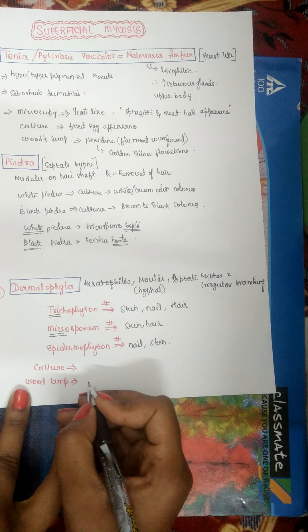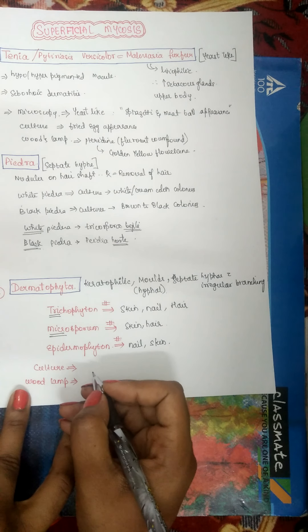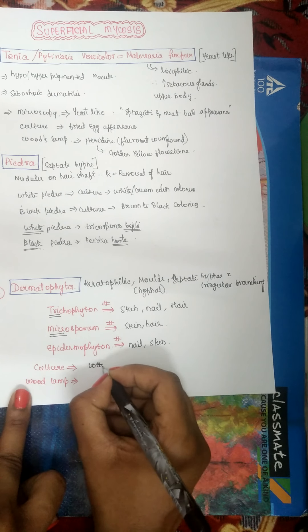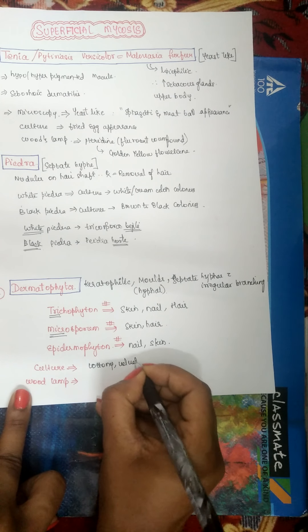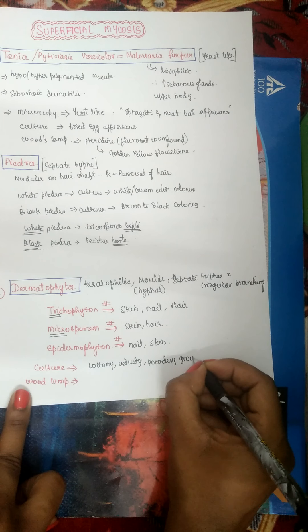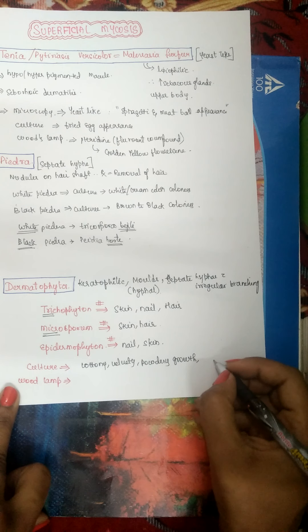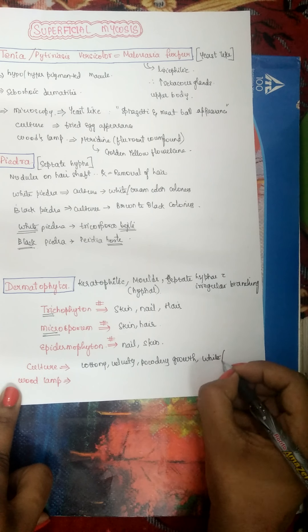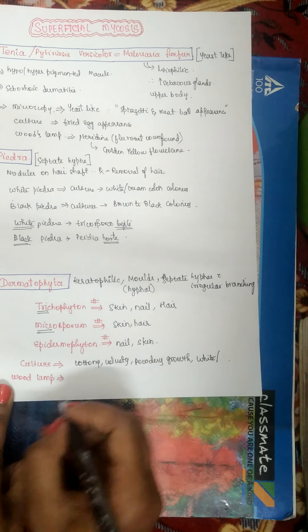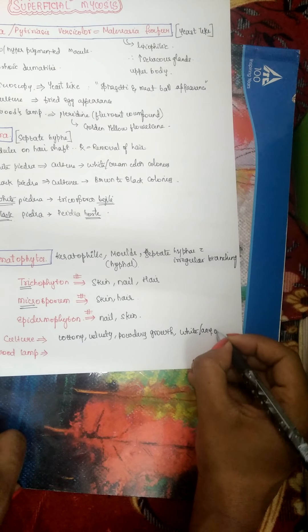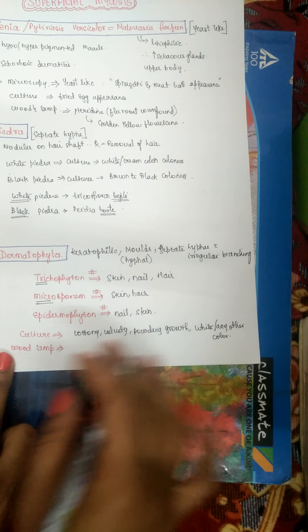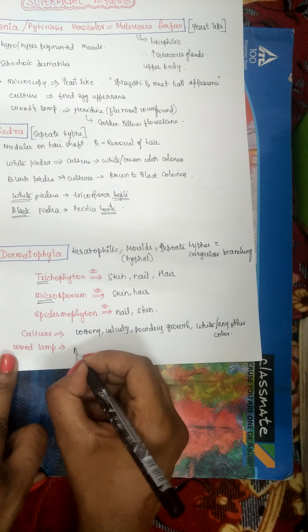On culture, dermatophytes give cottony, velvety, or powdery growth. The color can be white or any other color depending on the various species.